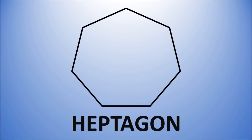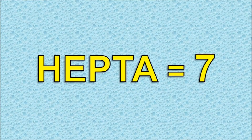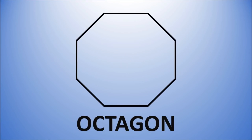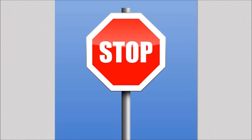A heptagon has seven sides and seven angles made from straight lines. The word hepta means seven — that's right. A heptagon has seven sides. An octagon has eight sides and eight angles made from straight lines.